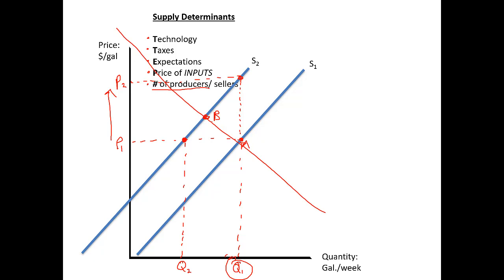And we will put everything together now — demand curves, supply curves, where they meet, equilibrium, price formation. Then we'll be ready to utilize the supply and demand framework and work through scenarios where we're shifting either supply determinants or demand determinants, or in some cases both, and see what happens to price and quantity in a market. Now we're really ready to do some essential microeconomic analysis. See you soon.